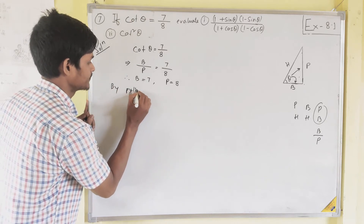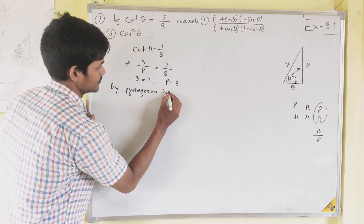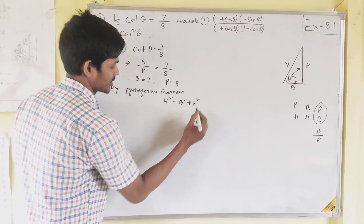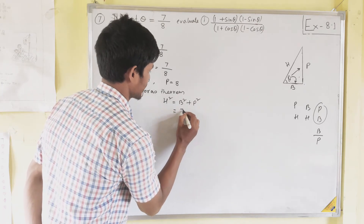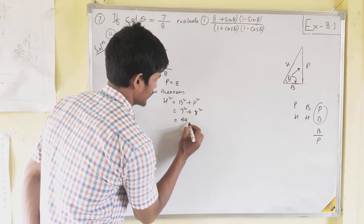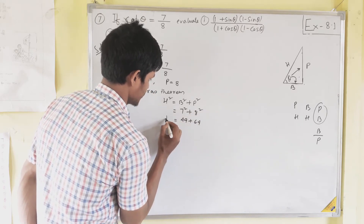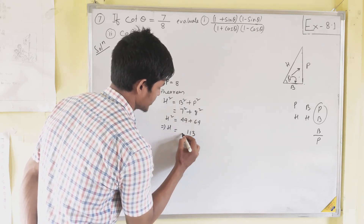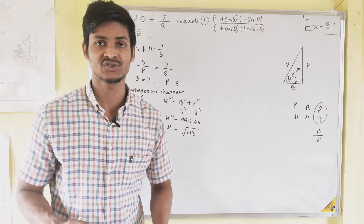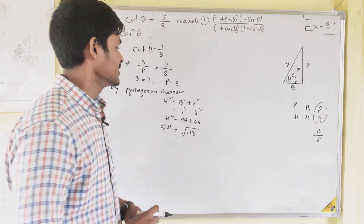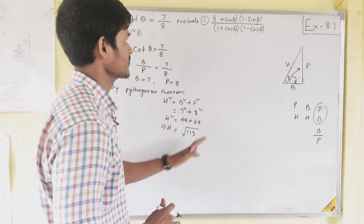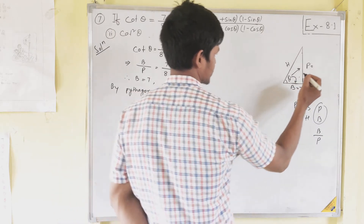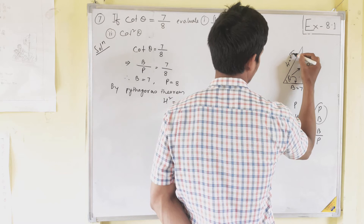Now we need to find the hypotenuse using the Pythagoras theorem: H squared equals base squared plus perpendicular squared. So H squared equals 7 squared plus 8 squared, which is 49 plus 64 equals 113. Therefore H equals root over 113, since 113 is not a perfect square. So base is 7, perpendicular is 8, and hypotenuse is root 113.